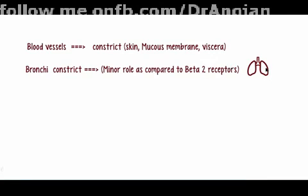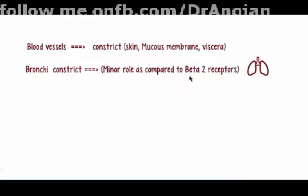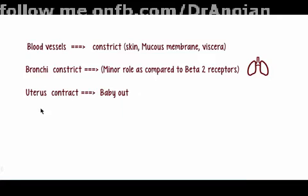Alpha-1 receptors have minor roles compared to beta-2 receptors. Beta-2 receptors result in dilation of bronchi, while alpha receptors are somewhat opposite. Their bronchoconstriction is not as significant as the bronchoconstriction produced by beta-2 receptors. Alpha-1 also causes constriction of the uterus resulting in expulsion of the baby.